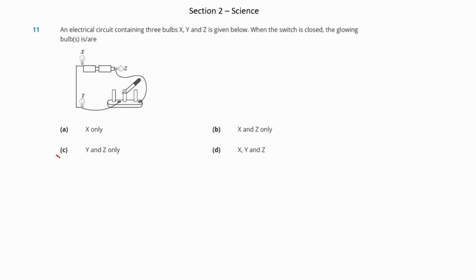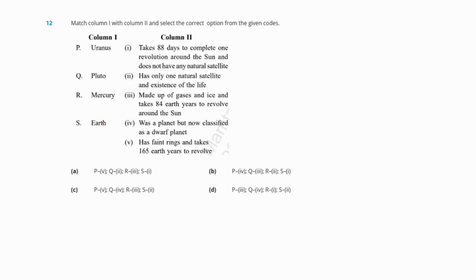Question 12: Match column 1 and column 2 and select the correct option. Uranus is made up of gases and ice and takes 84 Earth years to revolve around the sun, so P is 3. Pluto was a planet but now classified as a dwarf planet. Mercury takes 88 days to complete one revolution around the sun and does not have any natural satellite. Earth has only one natural satellite, the moon, and has existence of life. So our correct answer is option D.